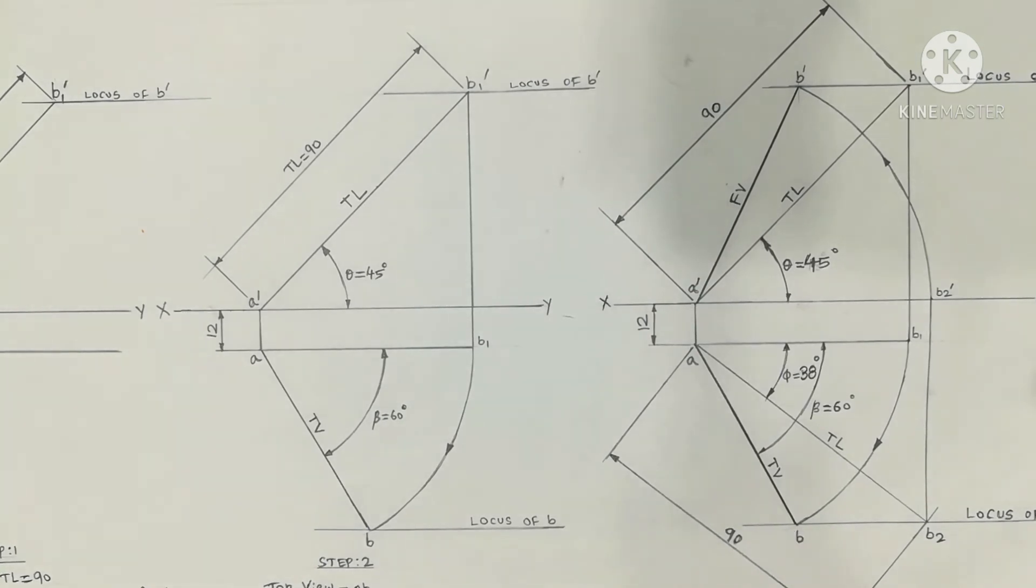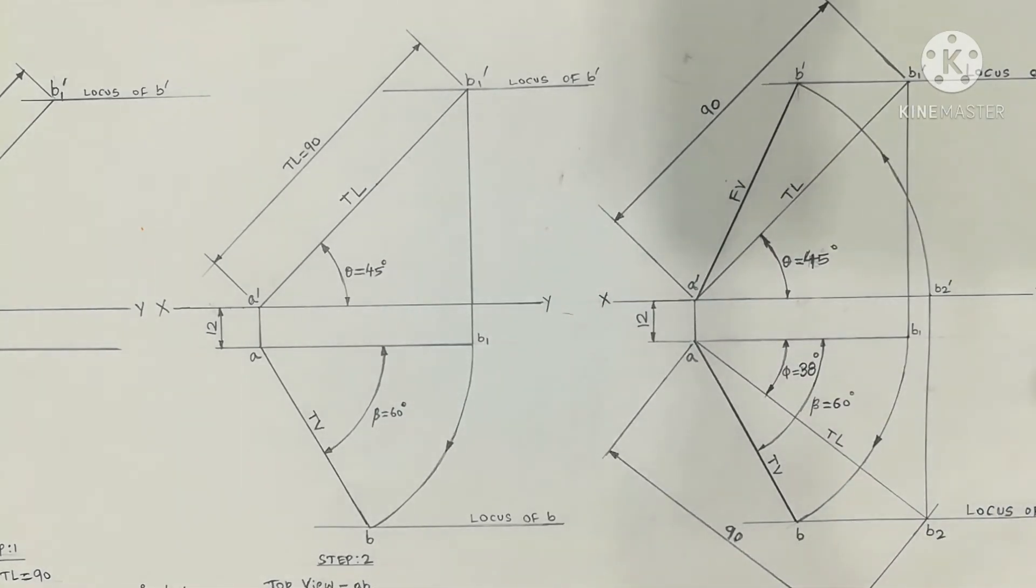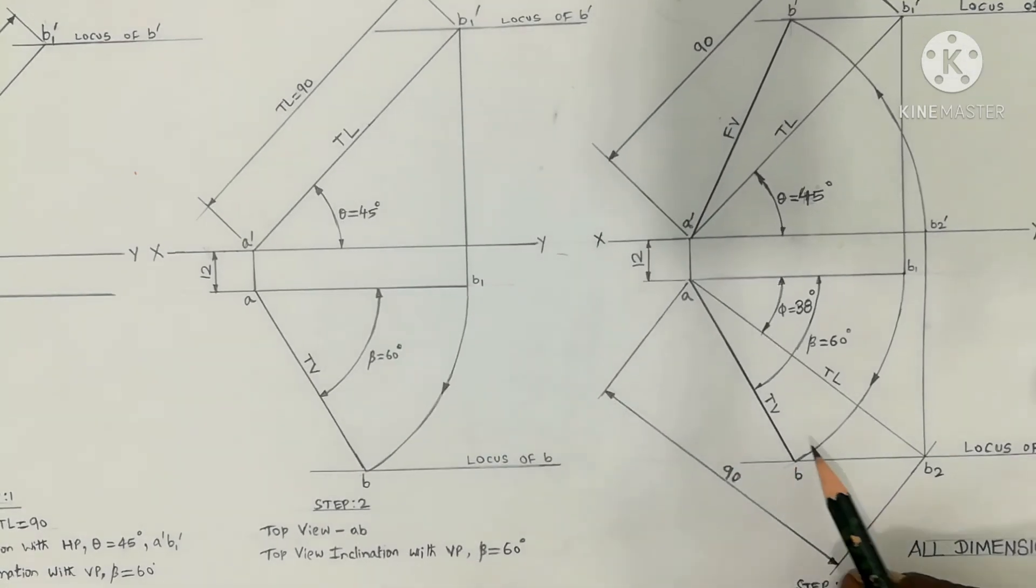It is drawing its positions. The question is draw its front view. A' and B' is the final front view. And find true inclinations with VP. True inclinations with VP.